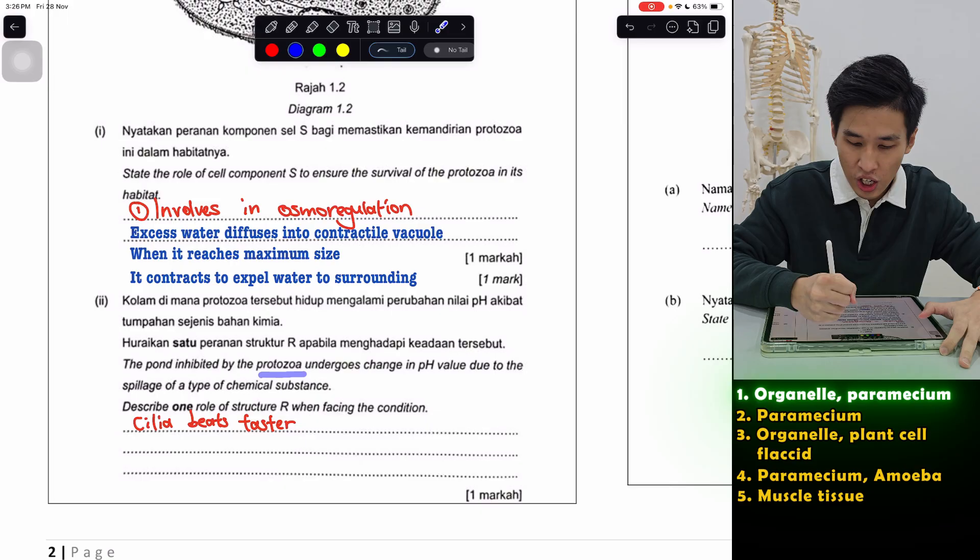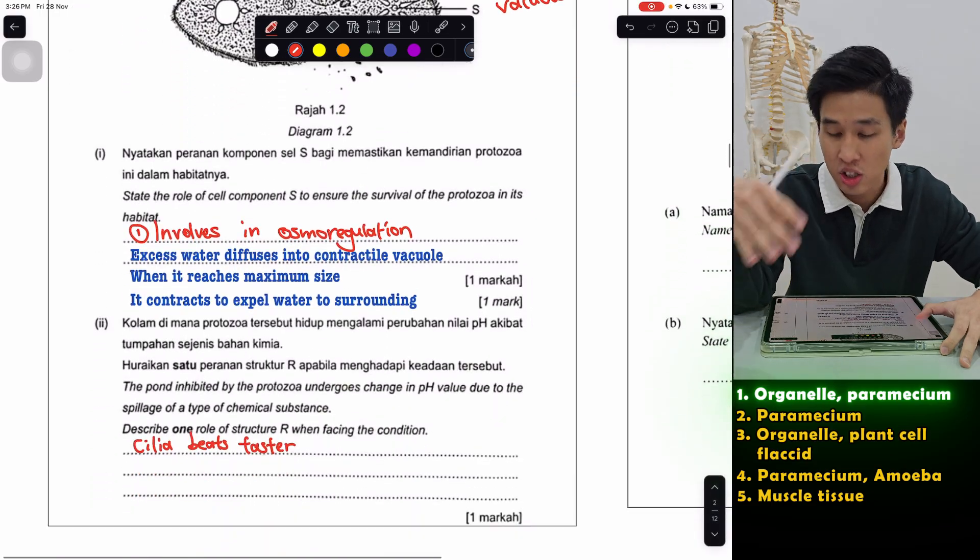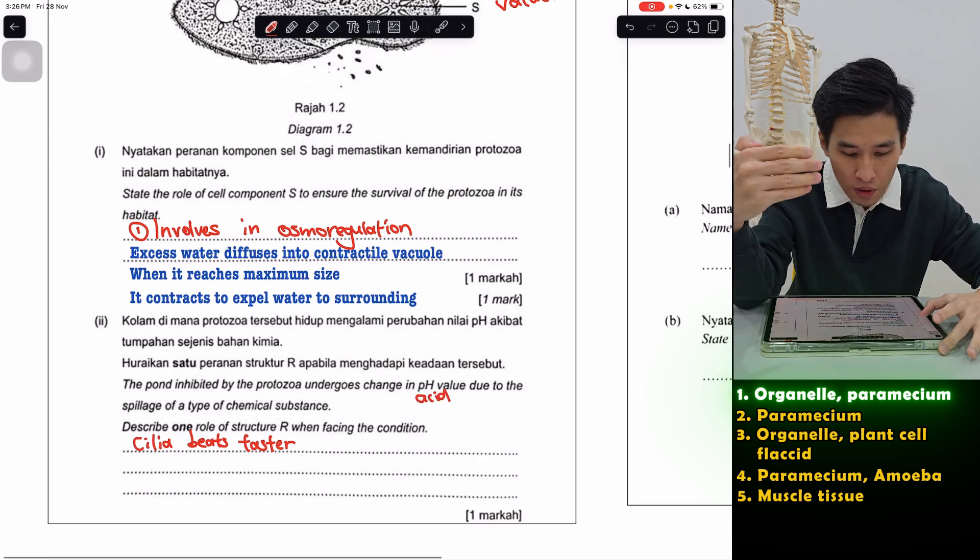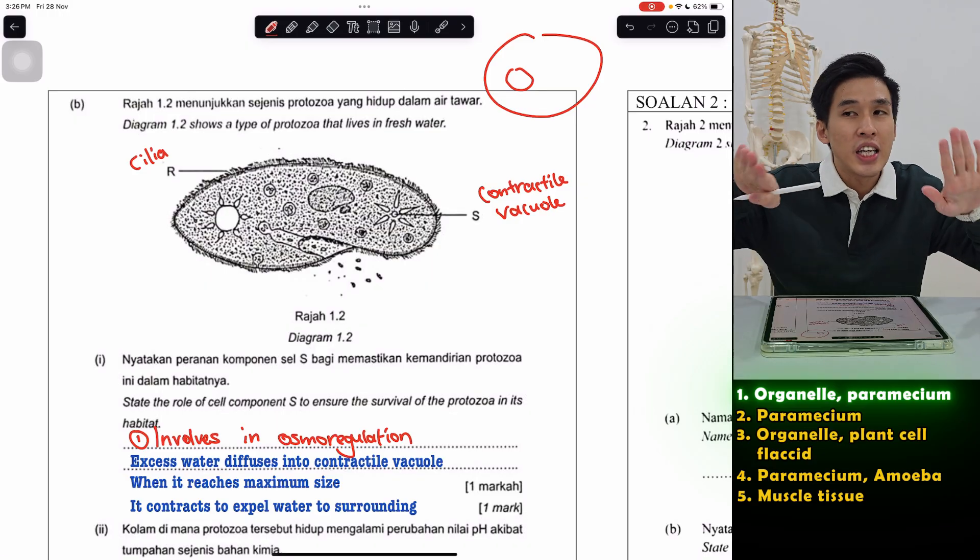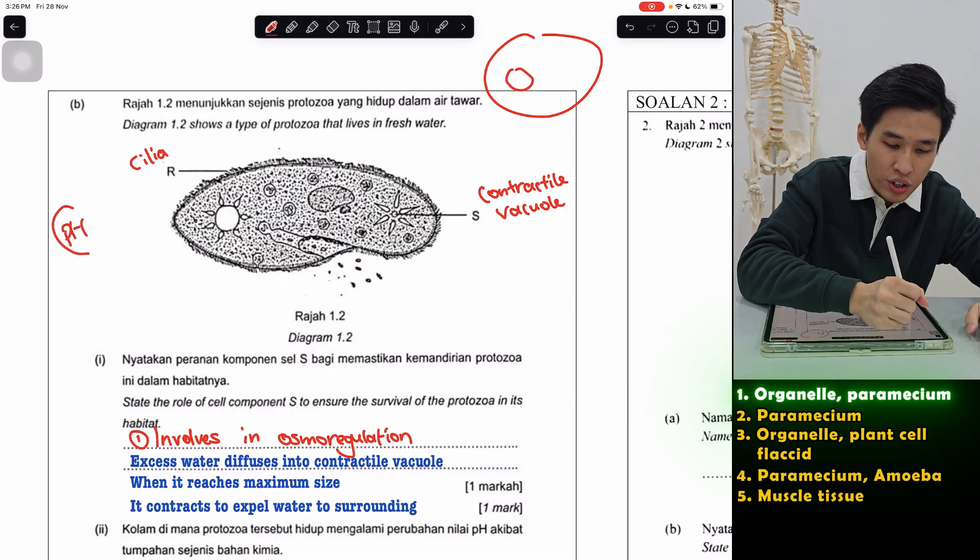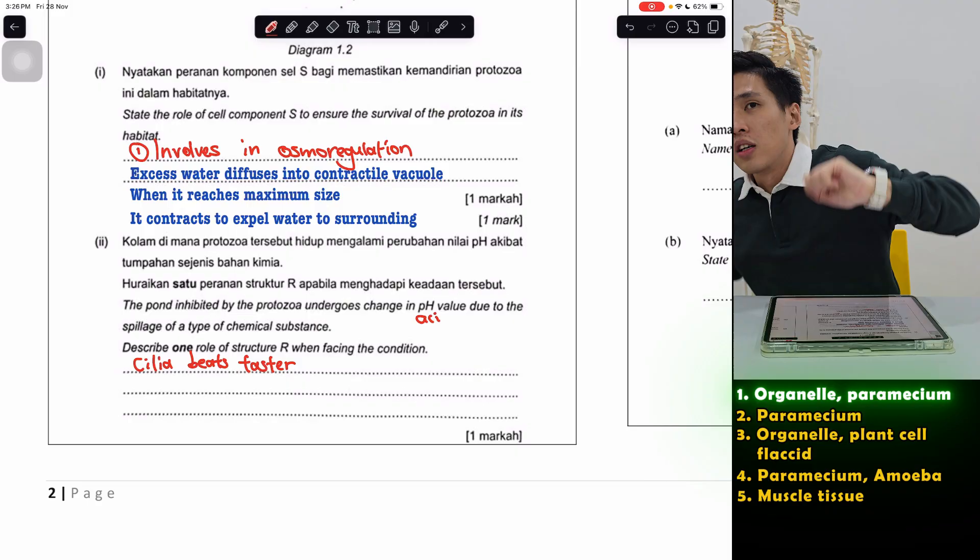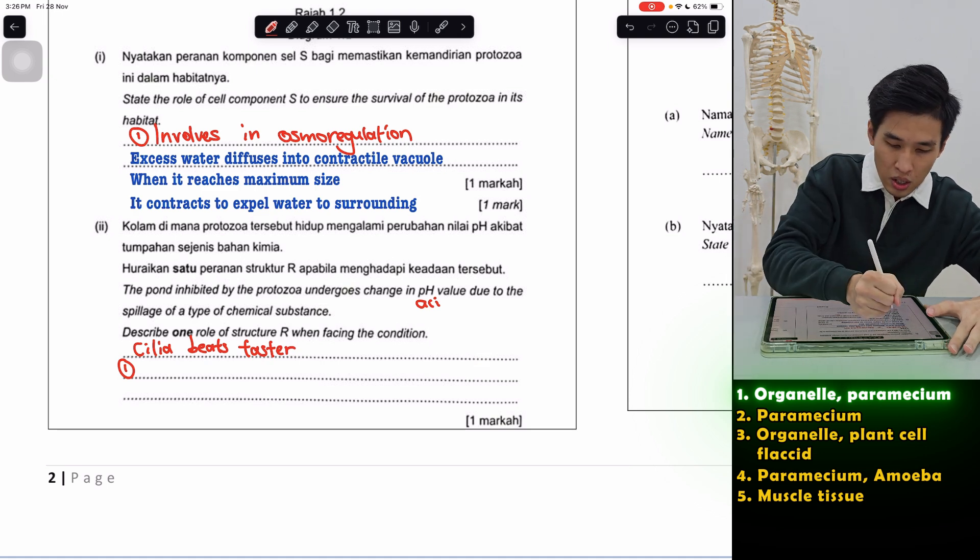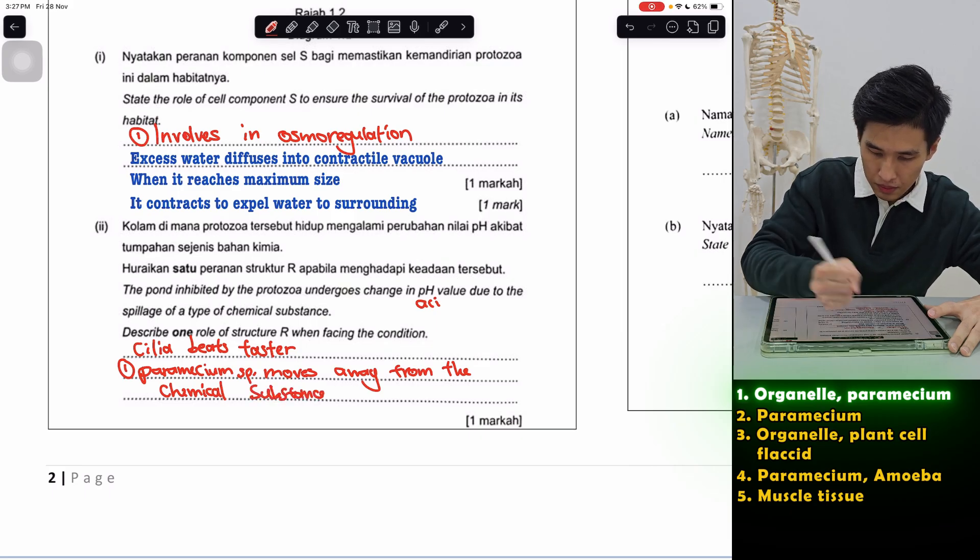Then the next question they ask. The pond inhabited by the protozoa undergoes change in pH value. Now usually for these unicellular organisms like amoeba, they prefer neutral environment. So if the pH changes, it's obviously a non-favorable environment. So describe one role of structure R when facing the condition. So R is the cilia. What does cilia do? We always say it carries out rhythmic beating. One of the functions of this cilia is to help it move. So obviously if there's pH change over here, the paramecium wants to move away from it. So I will say cilia beats faster, run away. And the paramecium moves away from the pH, from the chemical substance.